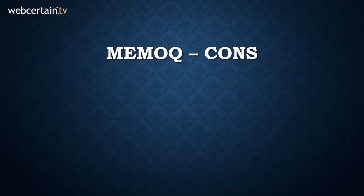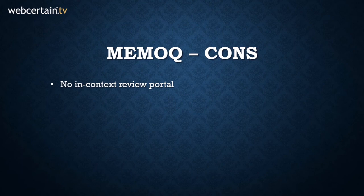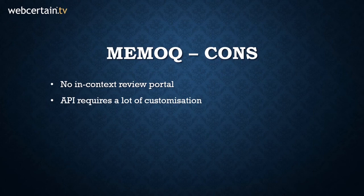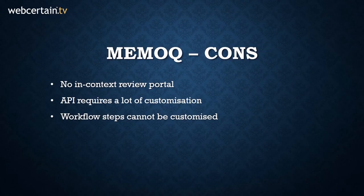Now let's look at MemoQ's cons. There is no in-context review portal, meaning that translators cannot see how their translations will be laid out in the final version, which may matter for things like software button text. Also, although there is an API available to plug directly into your client's CMS, it needs to be heavily customized in order to allow a direct connection, and this customization must be done by a team of developers on your side. Furthermore, the workflow steps are defined by MemoQ and cannot be customized to suit your specific needs. MemoQ is suitable for in-house translation teams, although it does allow you to send content to freelancers and external agencies if needed.